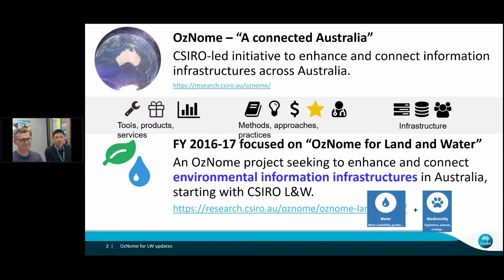If you haven't come across OzNome, this is a CSIRO-led initiative aiming to connect information ecosystems around Australia. The OzNome name was coined echoing the genome project, so Oz being Australia and the gnome being a genome kind of inspired project. We're looking at tools, services, products, methods, approaches, practices, and infrastructure to support having more connected information infrastructures. In the previous year we focused on environmental information infrastructures, and today we'll be talking about an example in the water space.